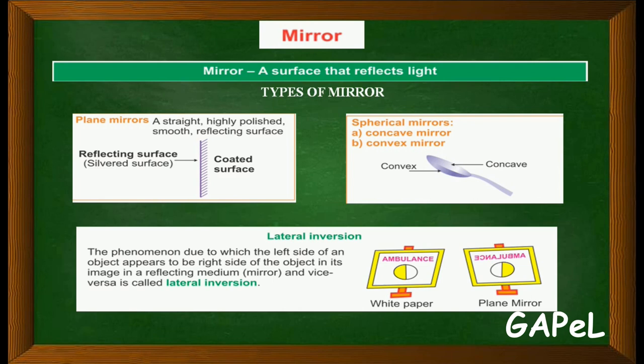So since you have understood the concept of mirror - what is a mirror, lateral inversion, reflecting surface, coated surface - image forms at the plane mirror. So that is real and virtual image. An image formed by plane mirror - you should know what is the meaning of real image, what is the meaning of virtual image. That we will see in detail.